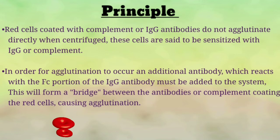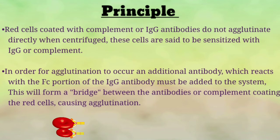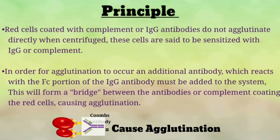जब IgG antibodies होती हैं, वो red blood cell से attach होती हैं — इसे हम कहते हैं 'red cell sensitized with IgG.' IgG की property है कि यह agglutination नहीं करती है। इसलिए हमें एक secondary antibody attach करनी होती है, और उसके लिए हम Coombs reagent का use करते हैं। यह Coombs antibody FC portion पर IgG antibody के attach होगी और agglutination cause करेगी।